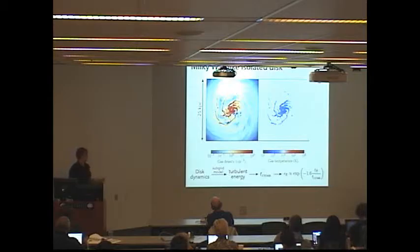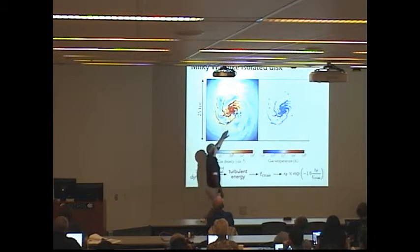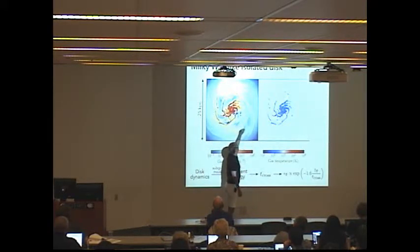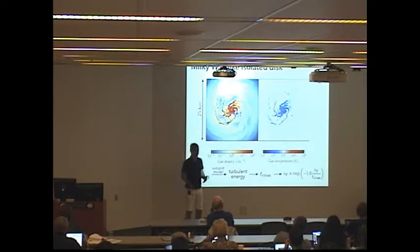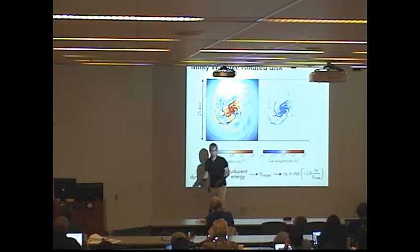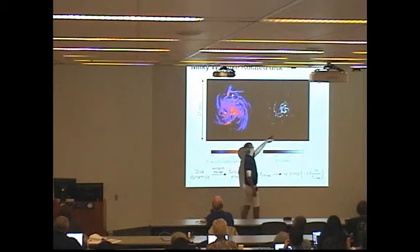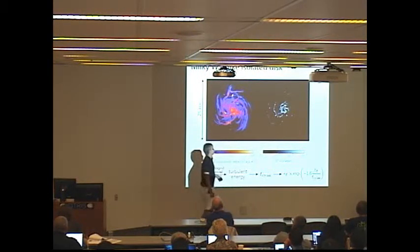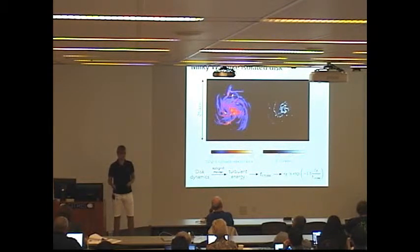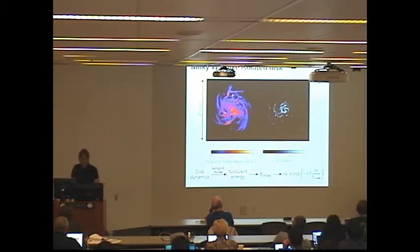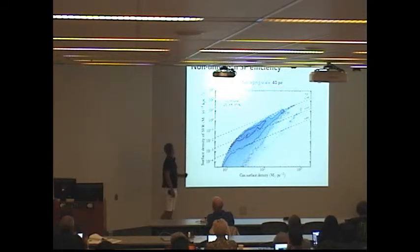Basically, what this model does, it takes the disk dynamics and predicts how much unresolved turbulence is there in each cell. Using this information, we can deduce a crossing time and use this crossing time as an input into this model for star formation efficiency. To show the power of this model, let's consider, for example, these two spiral arms. These two spiral arms have comparable densities and comparable temperature. If we apply usual star formation prescription based on temperature and density thresholds, we'll get that these two arms form stars equally efficiently. However, let's see what this model does.